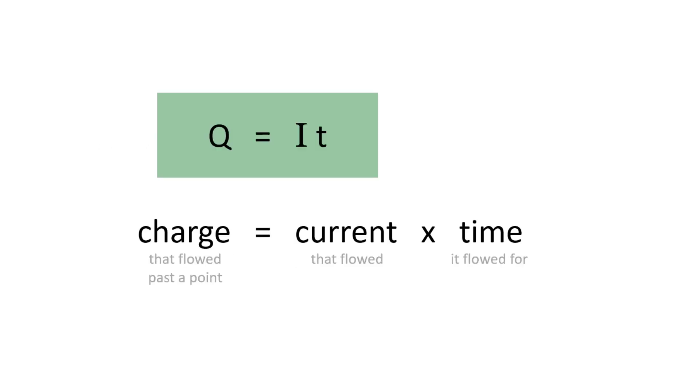In general, Q equals It. The charge that flowed past a point equals the current that flowed times the time that it flowed for.